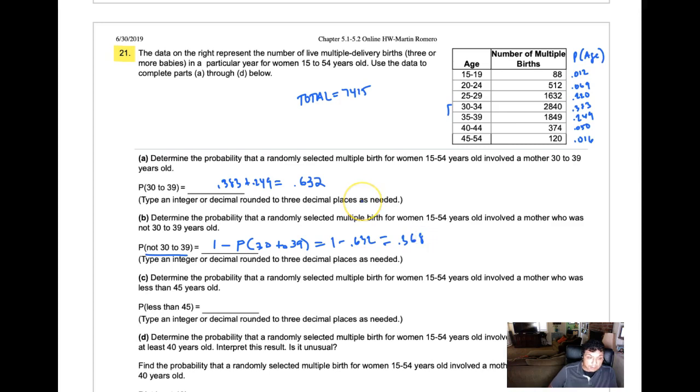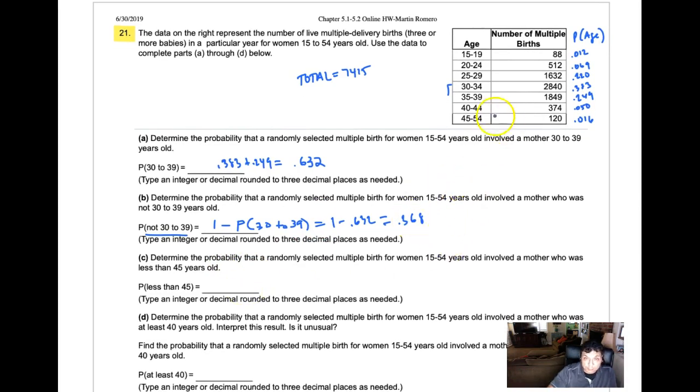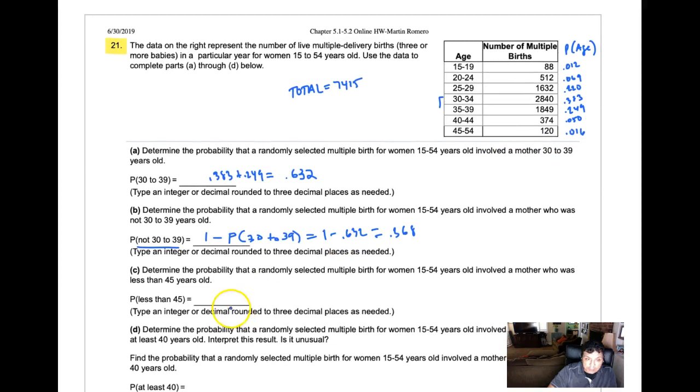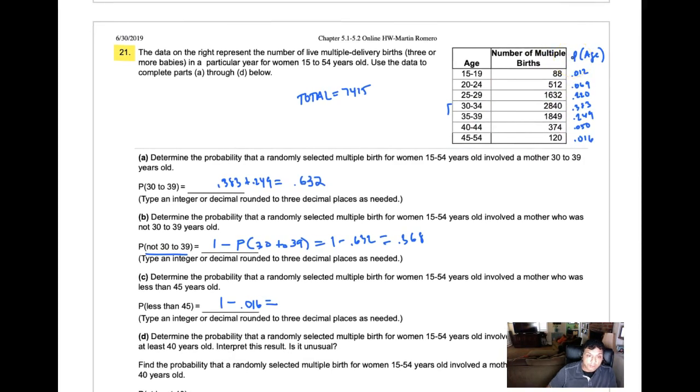To determine the probability that a randomly selected woman is less than 45 years old, you could add up all those probabilities, or the faster way is to do 1 minus 0.016. Because all of these add up to 1, so 1 minus 0.016 equals 0.984. There's a 98.4% chance that the woman would be less than 45.